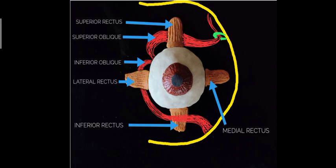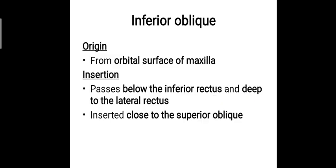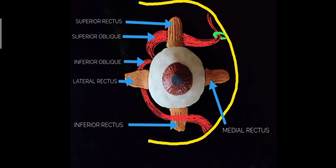The inferior oblique arises from the orbital surface of the maxilla bone. It passes below the inferior rectus, then deep to the lateral rectus, and is inserted close to the superior oblique. You can see it arising from the orbital surface of the maxilla, running below the inferior rectus, then deep to the lateral rectus, and finally inserting close to the superior oblique.